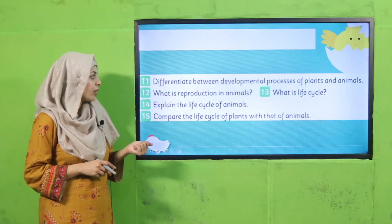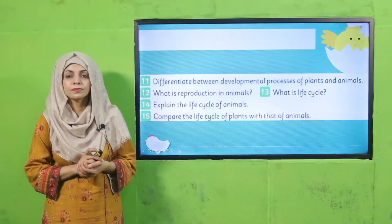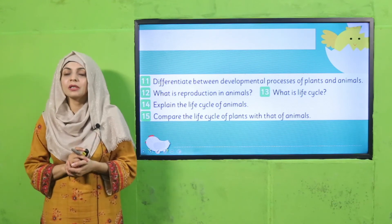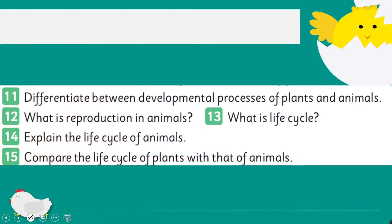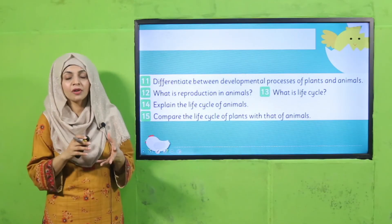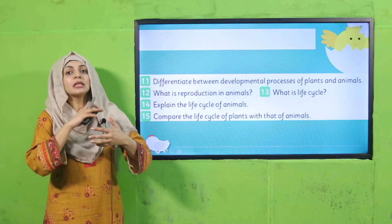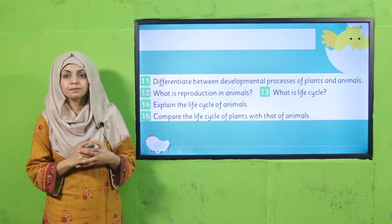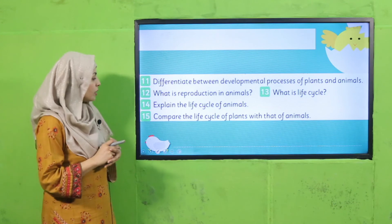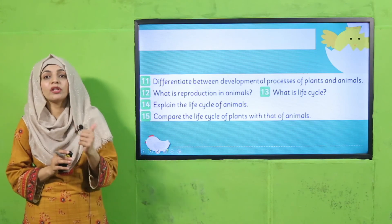For evaluation, quickly tell me: differentiate between the development process of plants and animals. What is reproduction in animals? When the animals are fully mature, they are able to lay eggs or give birth to live ones. What is life cycle? The continuity of life from which one animal grows and is then able to give birth — this continuity is called the life cycle. Explain the life cycle of animals. Now compare the life cycle of plants with that of animals. You can pause the video and answer the questions.